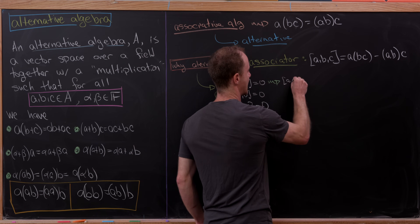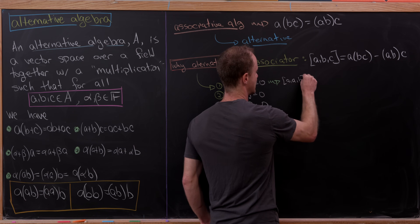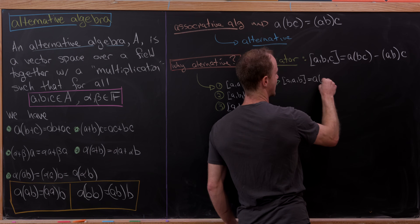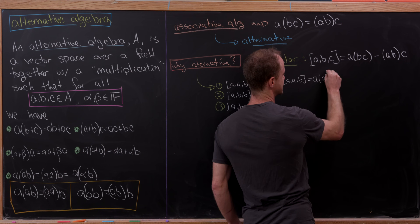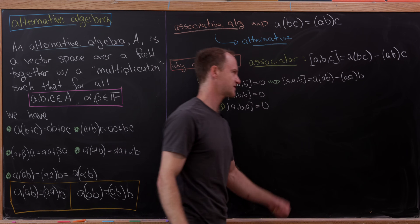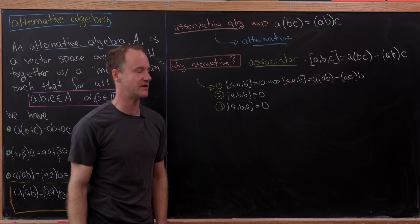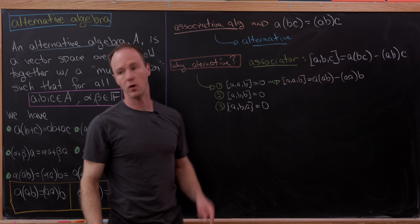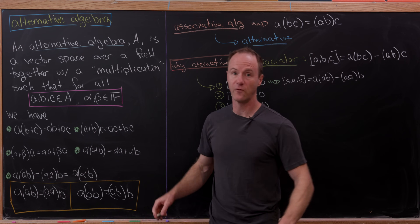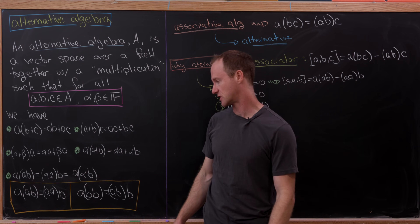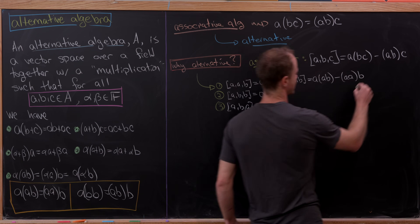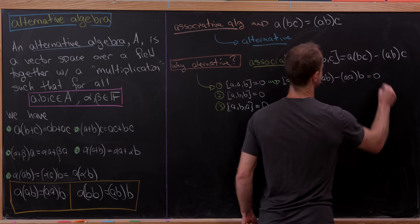The associator AAB by definition equals A times AB minus AA times B. But by one of the rules forming the definition of an alternative algebra, both of those terms are the same, so their difference is zero.